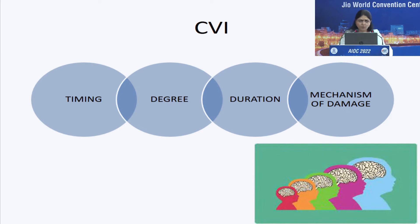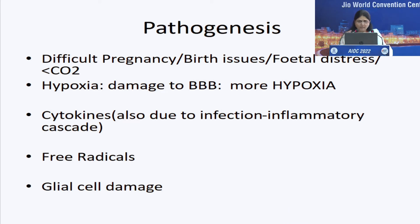The manifestations of CVI will really depend on the timing of the insult, the degree of the insult, the duration of the insult, and the mechanism of damage to the developing brain. At a basic pathogenesis level, what happens when there is hypoxia? Any of the factors cited above can give rise to hypoxia. That hypoxia will damage the blood-brain barrier, give rise to more hypoxia, release cytokines and free radicals, and eventually give rise to damage of glial cells.